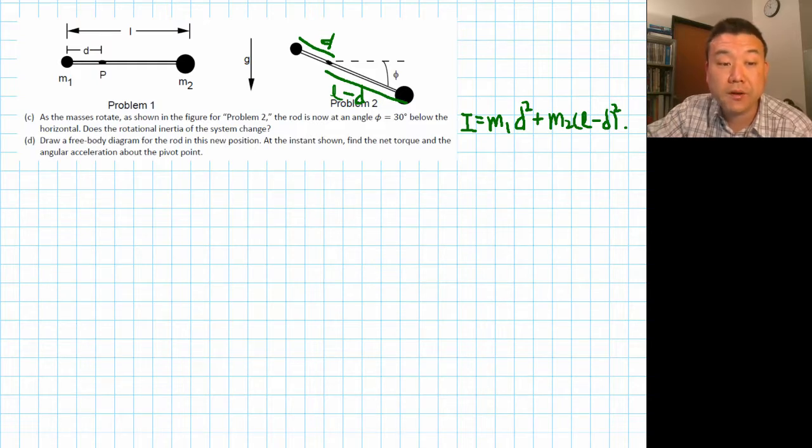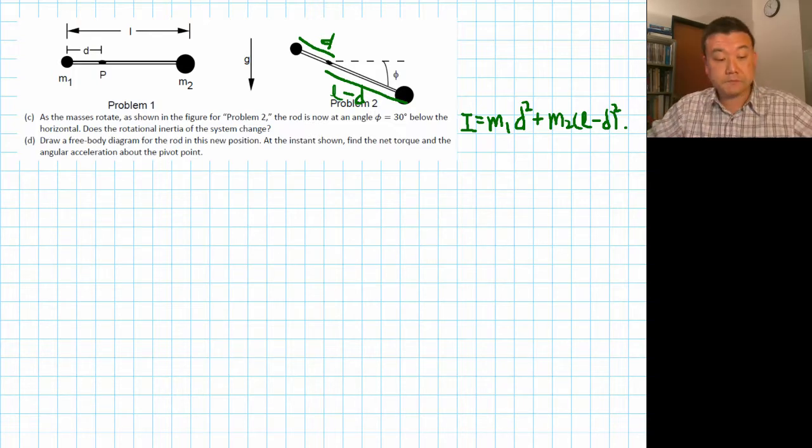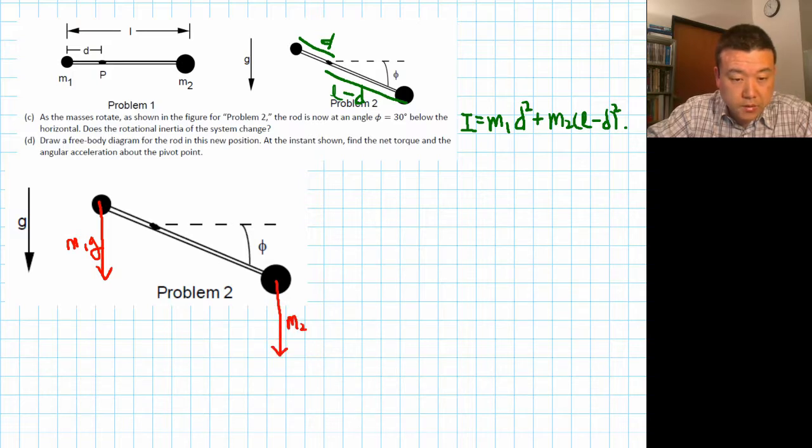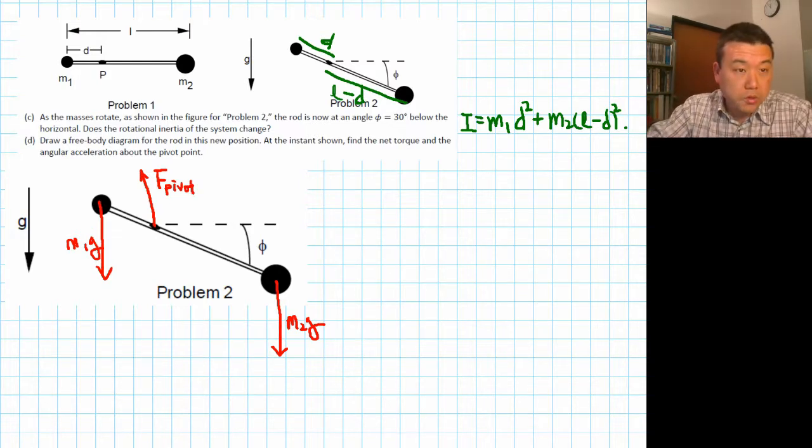Now it says to draw a free body diagram for the rod in the new position. Let me copy the bigger figure. I should start by drawing the forces. There's still the force of M1G acting vertically on this mass, and still the force of M2G acting vertically on this mass. And if I'm being picky again, there's still F pivot here which will make everything come out right in terms of the net force. Now what you hopefully realize here is that even though the force did not change and the rotational inertia didn't change, the lever arm for the force to the pivot has changed.